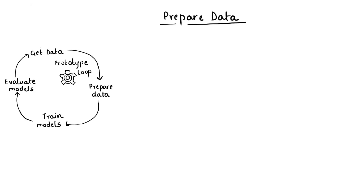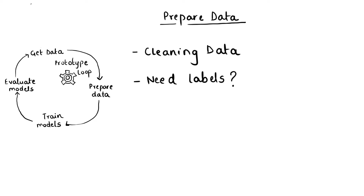After getting the data, data scientists prepare the raw data and perform data exploration — visualizing and transforming it, possibly repeating steps until it's ready for modeling. Data preparation is all about cleansing and processing raw data before analysis. Because raw data can be messy, contain duplicates, or be inaccurate, data scientists must explore the available data and cleanse it by identifying corrupt, inaccurate, or incomplete records and replacing or deleting them.